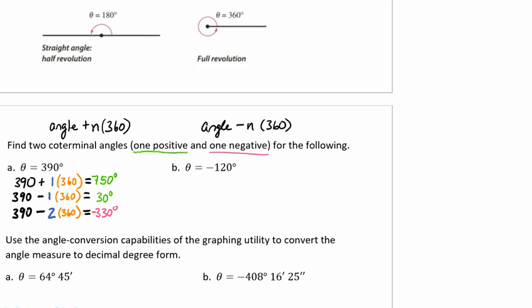For part B, we have theta equals negative 120 degrees. So we're going to start with our angle at negative 120 degrees, and we're going to subtract 1 times 360, and that's going to give me negative 480. It doesn't matter which one you do first, adding or subtracting. So now we need our positive angle. So I'm going to do negative 120 plus 1 times 360, and when we do this, we get a positive 240. So here, it only took one revolution around to find a coterminal angle.